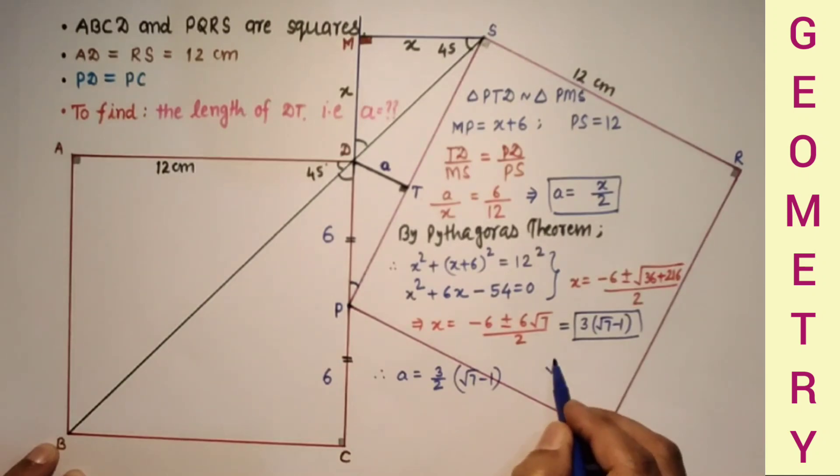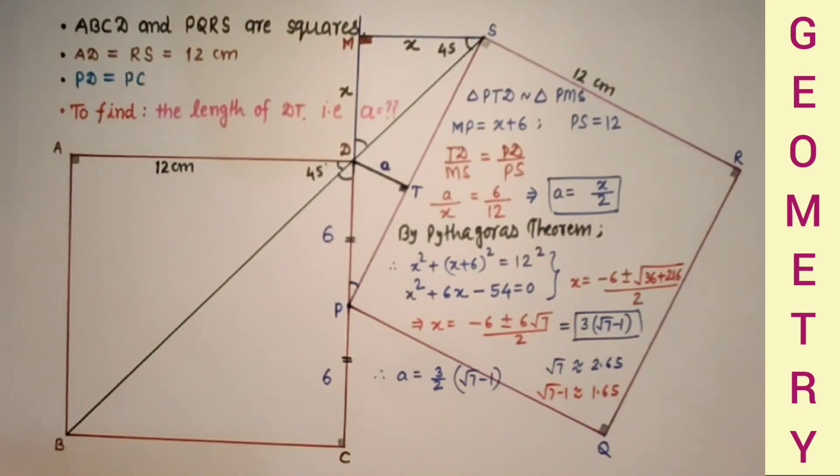Root 7 is approximately 2.65, so therefore root 7 minus 1 is equal to approximately 1.65.